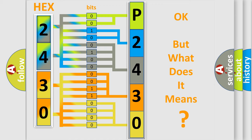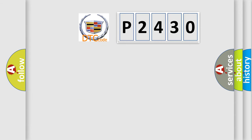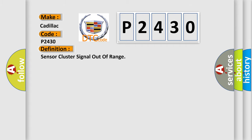We now know how the diagnostic tool translates received information into a more comprehensible format. The number itself does not make sense if we cannot assign information about what it actually expresses. So, what does the diagnostic trouble code P2430 interpret specifically for Cadillac car manufacturers?